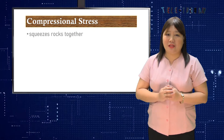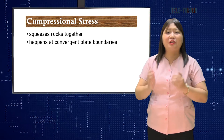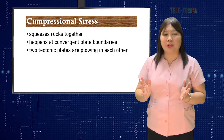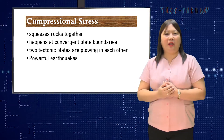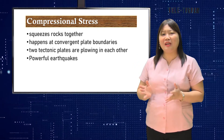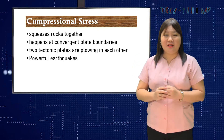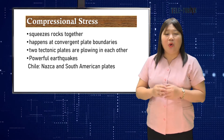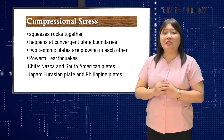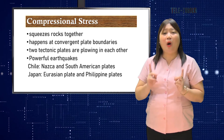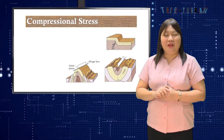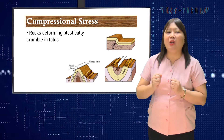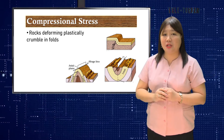Compressional stress squeezes rocks together. It happens at convergent plate boundaries in which two tectonic plates are plowing into each other. Powerful earthquakes tend to strike areas where compressional stress is at work, such as in Chile where the Nazca and South American plates are smashing into each other, or near Japan where the Eurasian plate and Philippine plates are grinding against one another. Rocks deforming plastically under compressive stresses crumple into folds and do not return to their original shape.